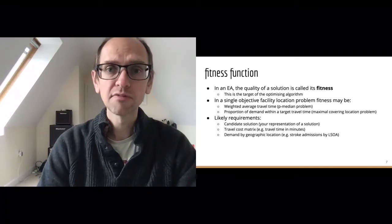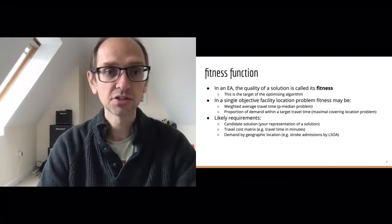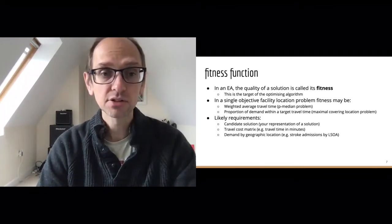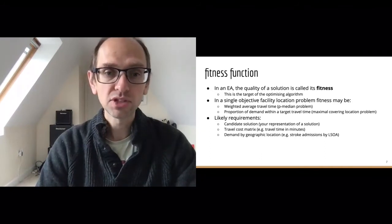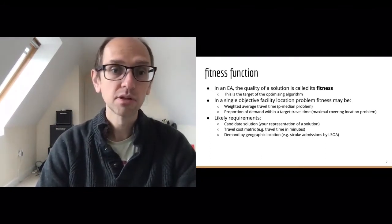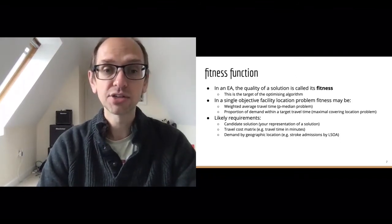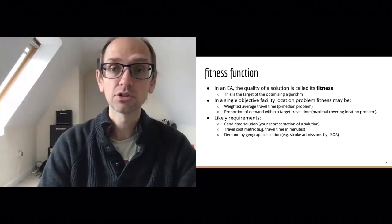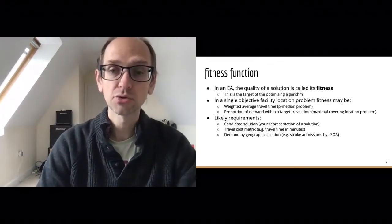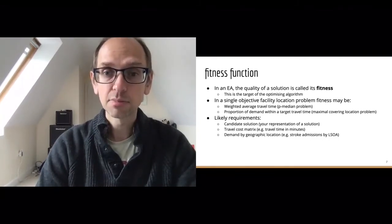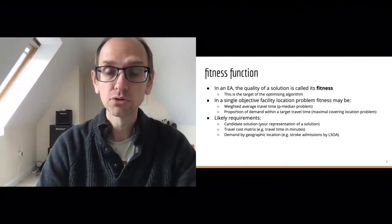The information you're likely to need to pass to a fitness function includes: the candidate solution in whatever representation you've chosen; the travel time matrix — the cost of travelling from one location to another; and the demand by geographic location — for example, stroke admissions by lower super output area, or in our sexual health case, the number of people living in a particular postcode sector.